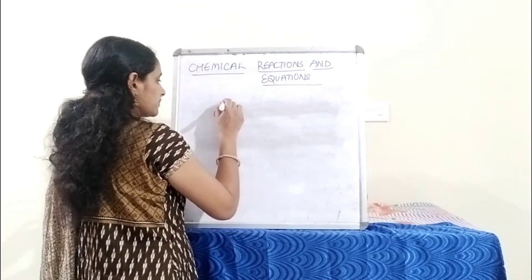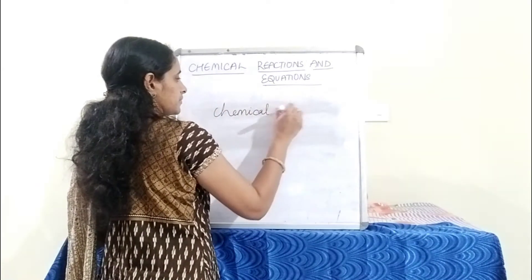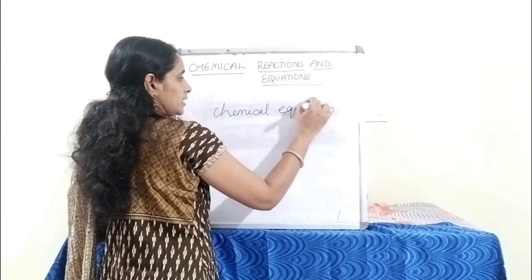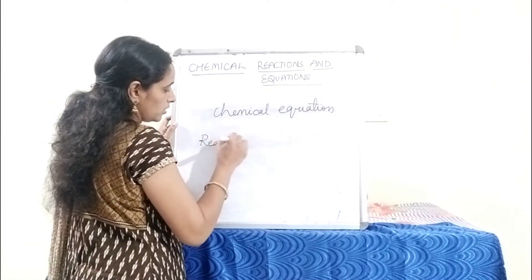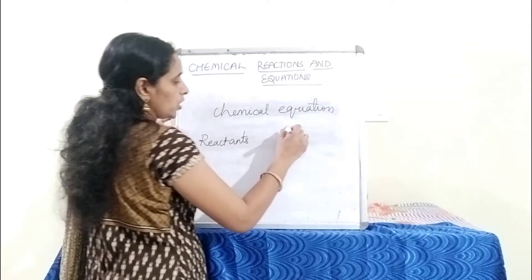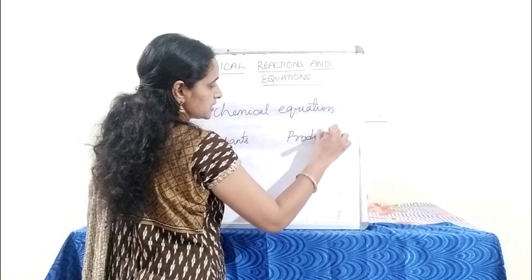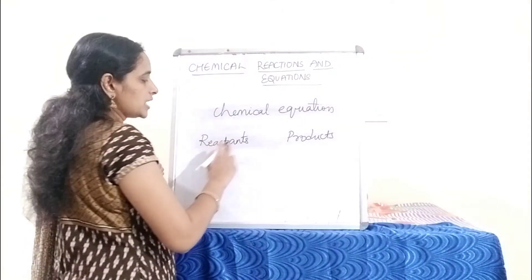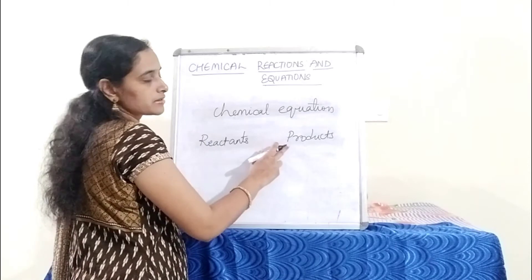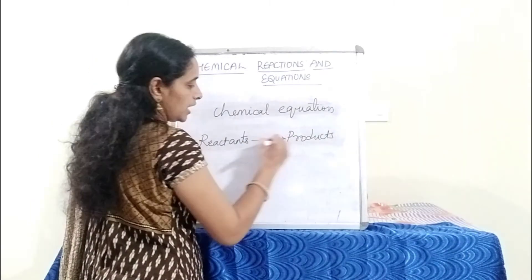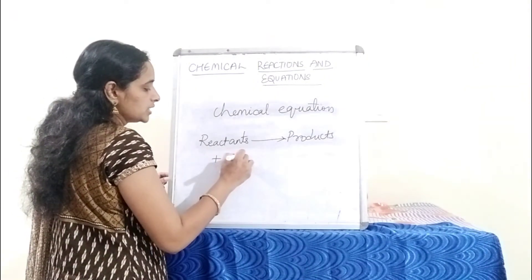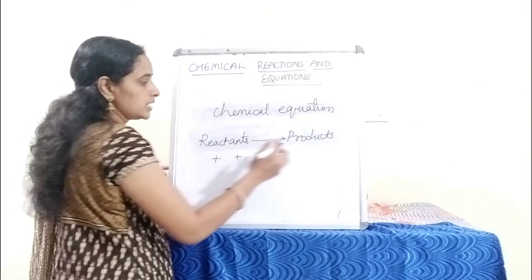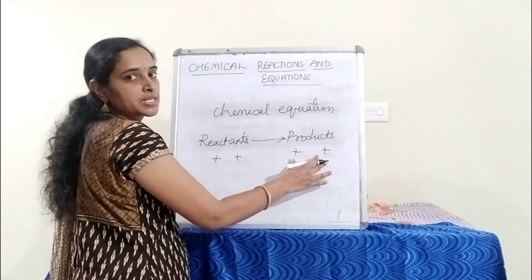We will see how to write a chemical equation. The reactants are written on the left-hand side of the reaction and the products formed are written on the right-hand side. The conversion of reactants into products is indicated by an arrow. If there is more than one reactant or product, each is separated by a plus sign.